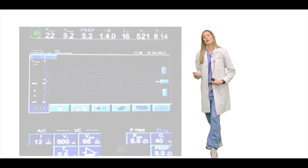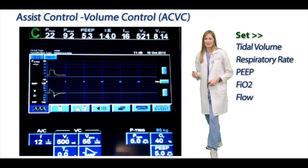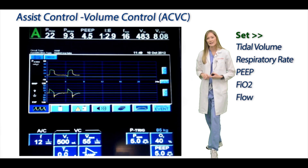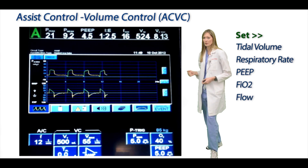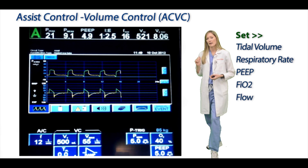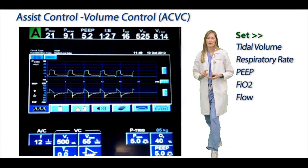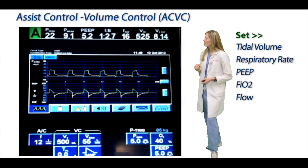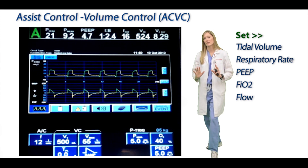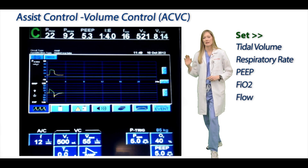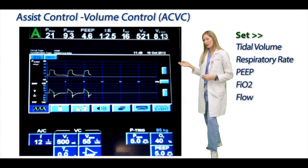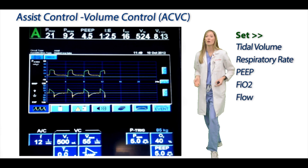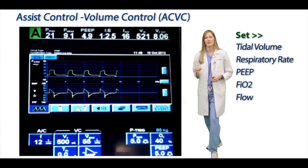The first mode we'll look at in the ICU is assist control volume control. We can control either pressure or volume, and as the name suggests, this mode controls volume. That means you're going to set tidal volume, respiratory rate, PEEP, and FiO2. These breaths are all going to look pretty much the same because you're telling the ventilator exactly how to deliver them based on tidal volume, rate, and flow — which is frequently set by the respiratory therapist. If the patient is breathing over your set rate, all of their breaths are going to be fully assisted in this mode.